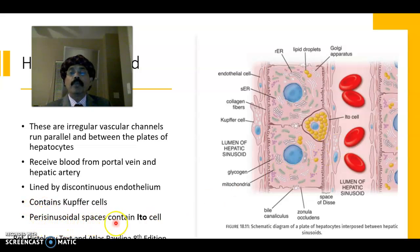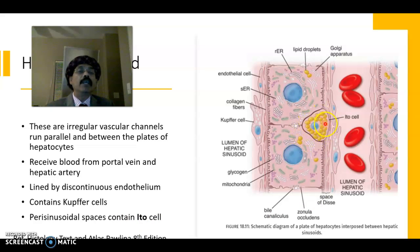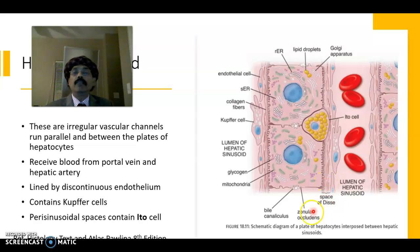Perisinusoidal spaces contain Ito cells. This cell is rich in fat and vitamin A, and is present in the perisinusoidal space of Disse.